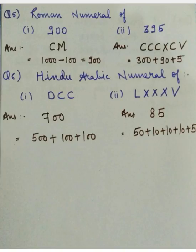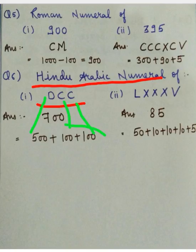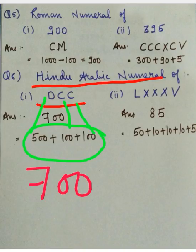Moving to the next question, we have to write the Hindu-Arabic numeral of DCC. D represents 500, and C represents 100 — and C appears twice. On adding all three: 500 plus 100 plus 100, we get 700. So DCC represents 700.